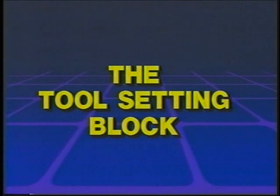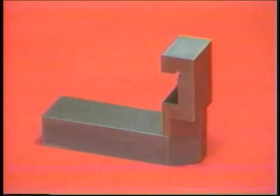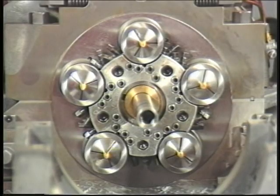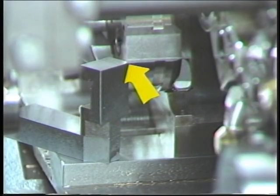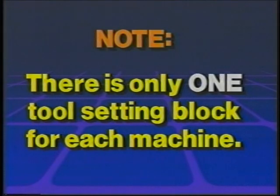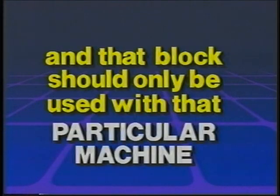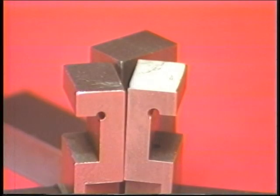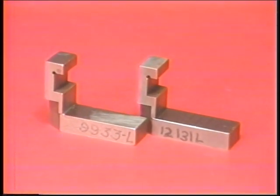The tool setting block. An important part of tooling is the tool setting block, which is made specifically for each machine and should only be used on the machine for which it is made. The tool setting block is used to determine the center line on the work spindle. The center line on the spindle corresponds exactly to the height of the tool setting block when the block is placed on the tool slide. Never take a tool setting block from one machine and use it on another, as the tools will not be set to center and will not cut properly because block heights are different. Be sure the serial number on the block matches that of the machine.